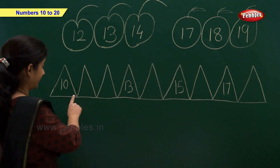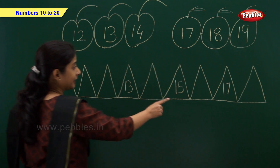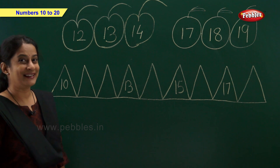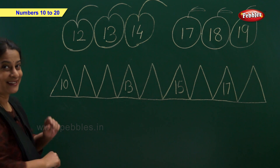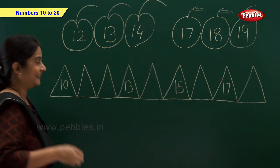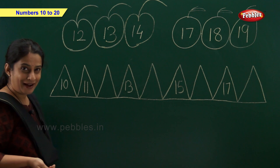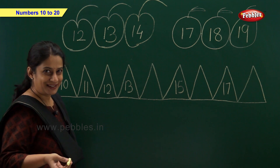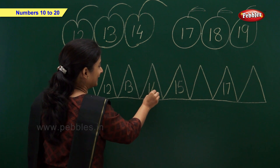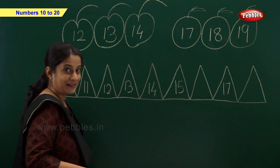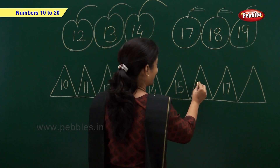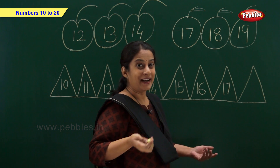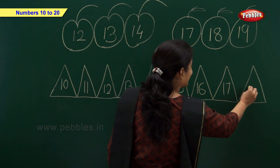Now we have 10, 13, 15, and 17 — so which are the missing numbers? Come on, tell me fast! After 10 write 11, and now 12, 13, and after 13 write 14, 15. Write 16. Now we have 17, and after 17 write 18.